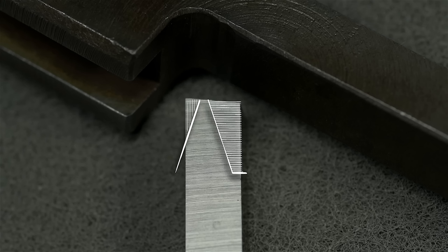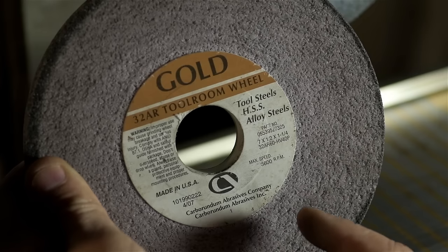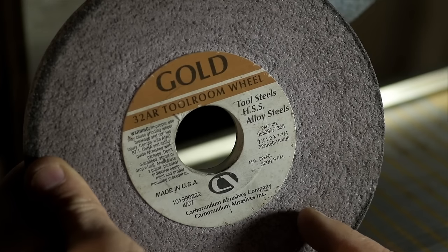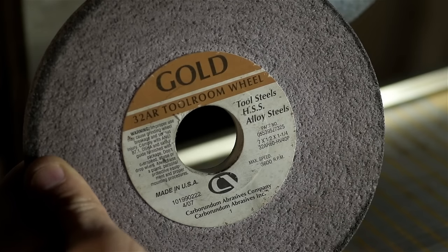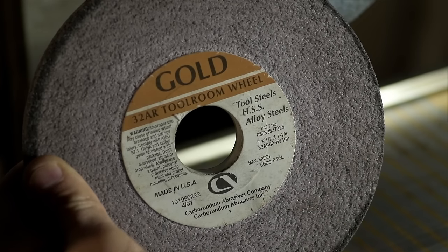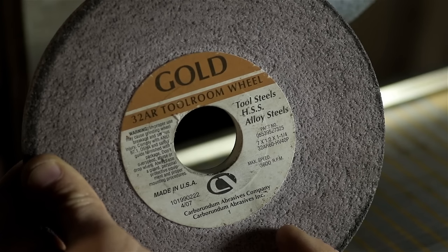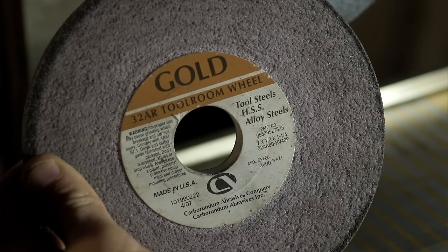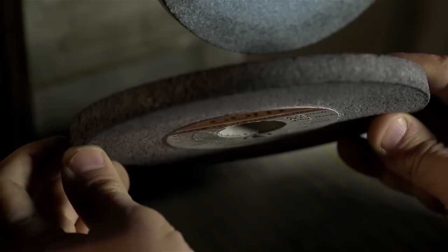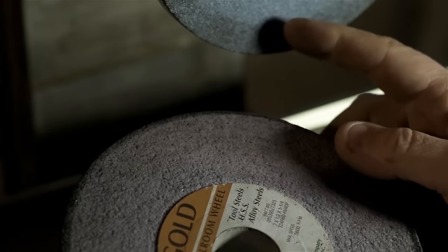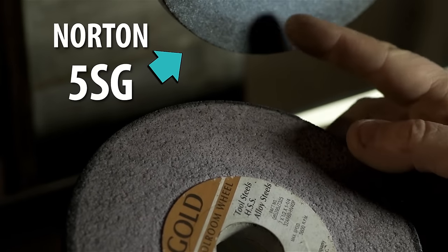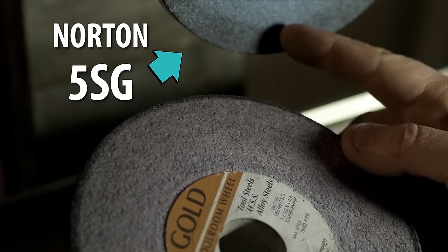If anybody's wondering, this is the wheel I use for high speed steel. It's a gold 32A-R tool room wheel. Despite it being almost lunchtime, these things eat high speed steel for breakfast. You can find these on eBay, I think I paid less than 20 bucks. This is a seven inch by half inch wheel, my go-to. The one that's on there almost all of the time is a Norton 5SG.